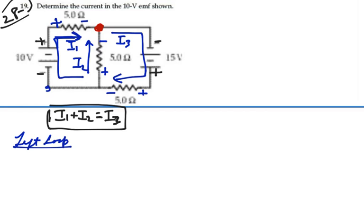So now my left loop. Select a starting point. And walking my way around clockwise I have negative 10 plus 5I1 minus 5I2 equals 0.